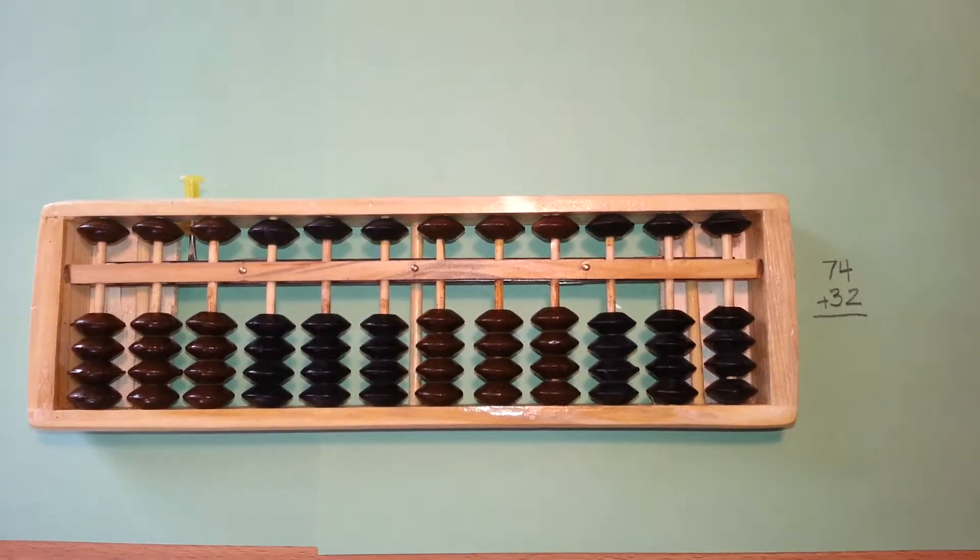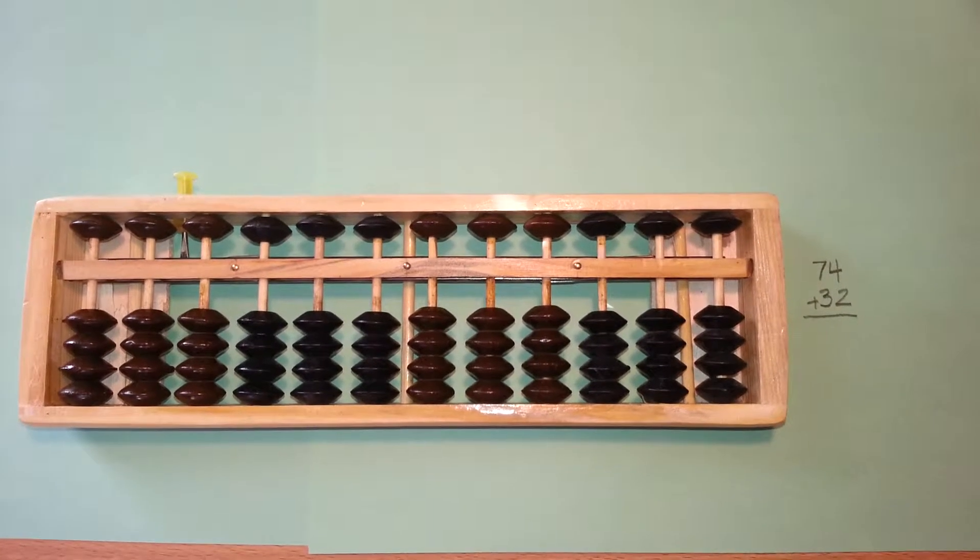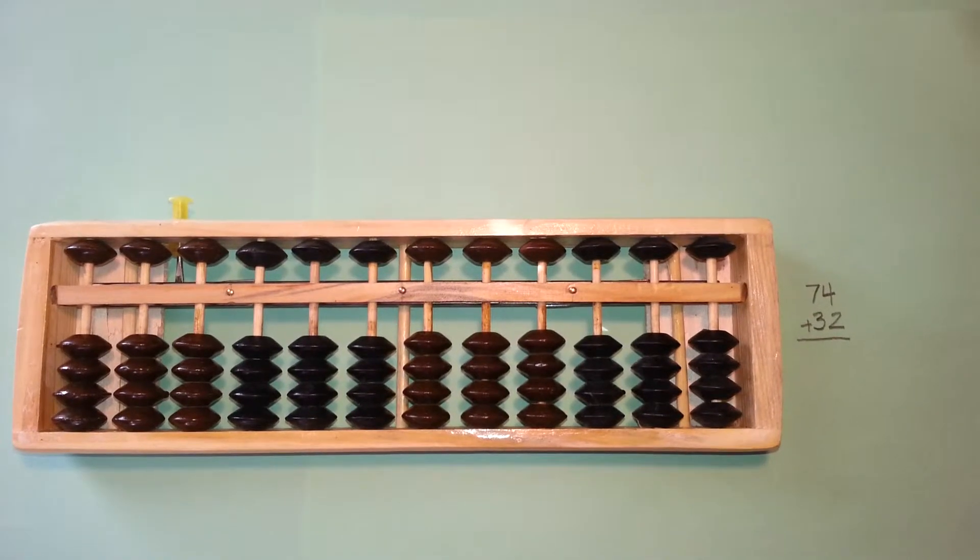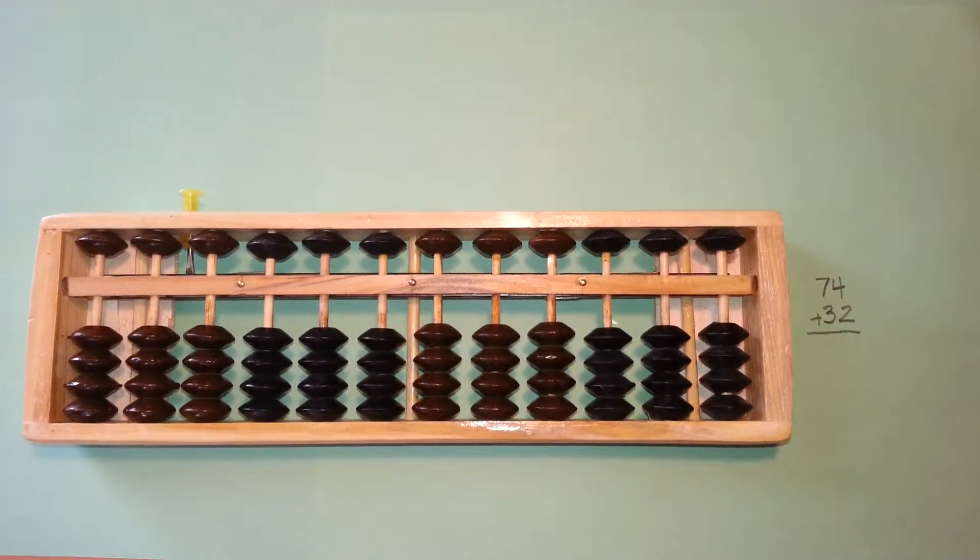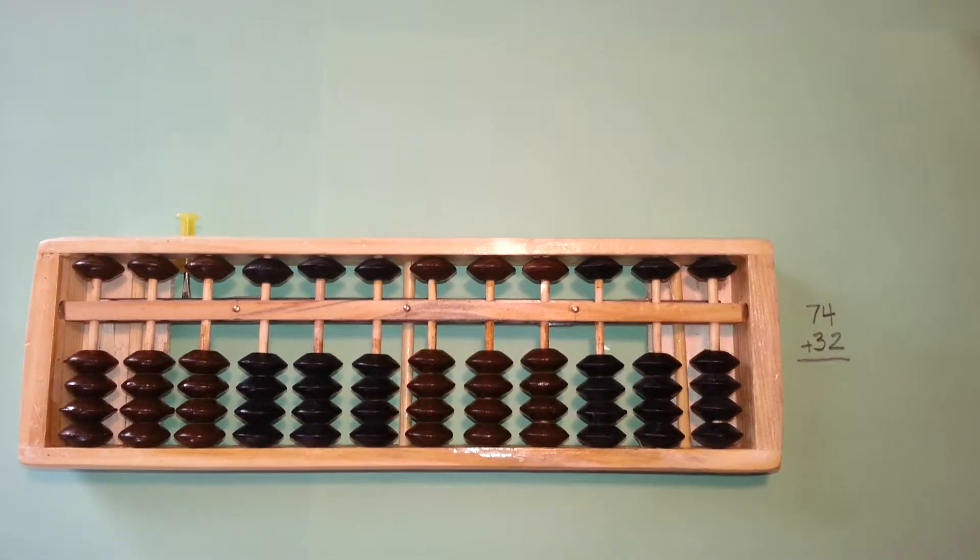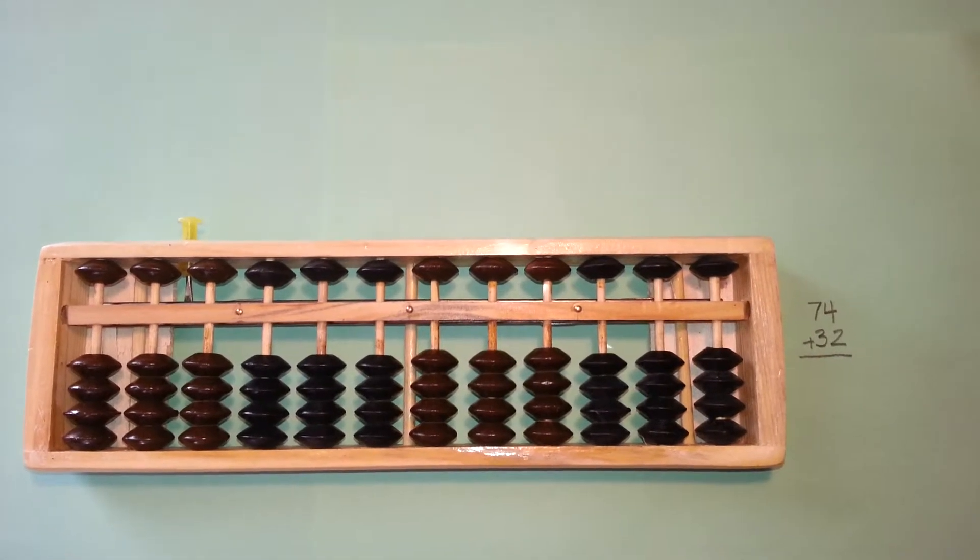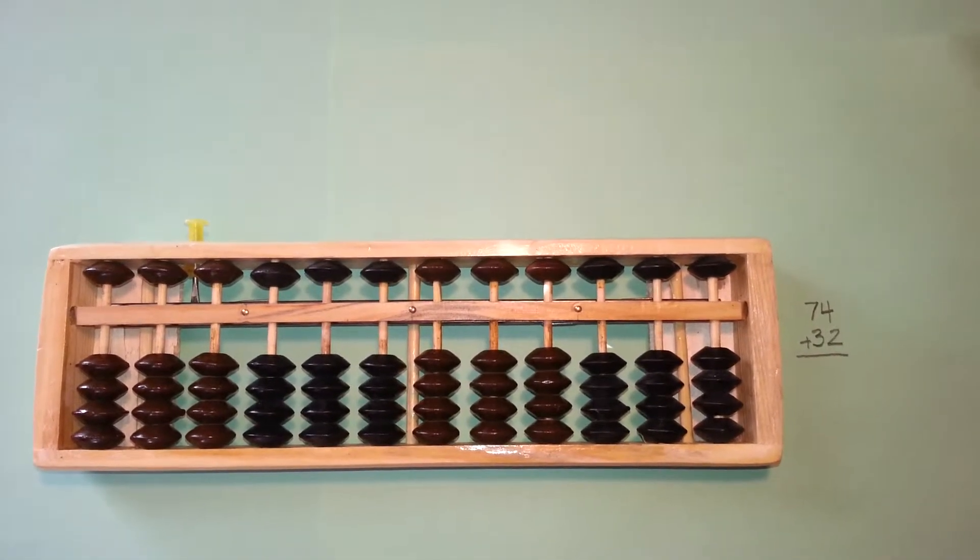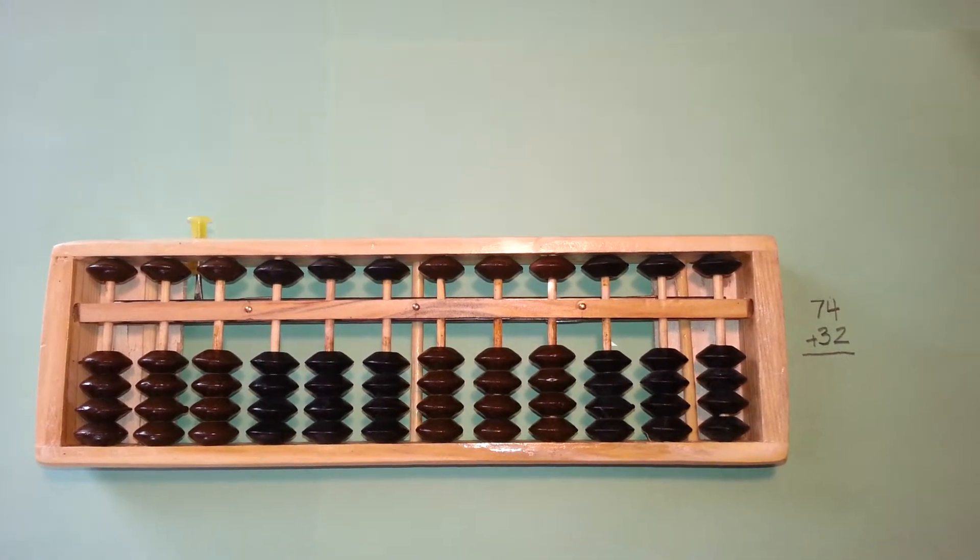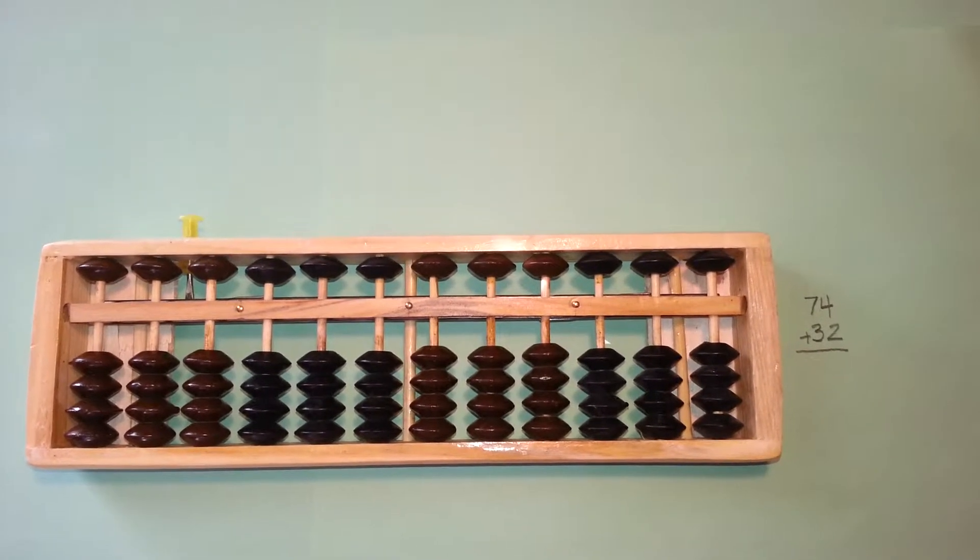There are two distinct situations that arise when regrouping with the Soroban. One is when the sum of the greatest digits is 10 or larger, and the other situation is when the sum of any of the other places you're adding is 10 or greater. I would suggest beginning with the first case where the sum of the greatest digits is 10 or greater, because this is the easier of the two for students to begin with on the Soroban.